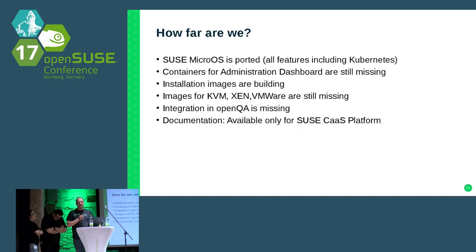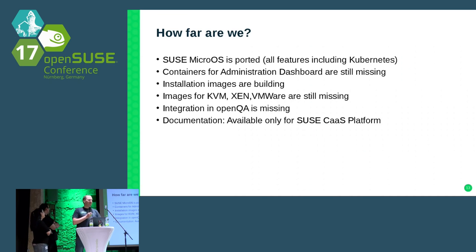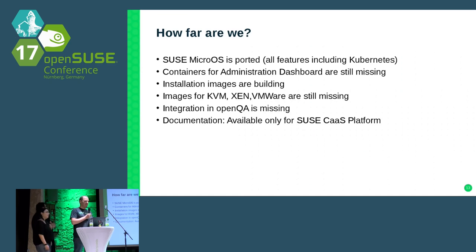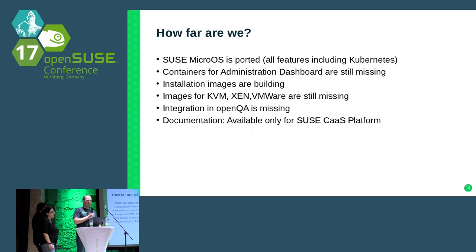We're not just making a theoretical announcement — since two days ago, ISO images are available to download and install, thanks to Dominic who even paused Tumbleweed check-ins for a few hours to get working images out. The project is not finished yet. The microOS part is ported to Tumbleweed, including Docker engine, Kubernetes, and so on. But for example, the containers for the administration dashboard are still missing. Once you install from the DVD, Docker is running and you can already play with it, and you can configure Kubernetes yourself.